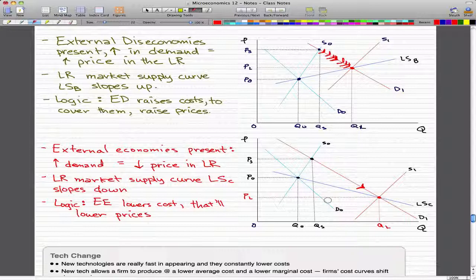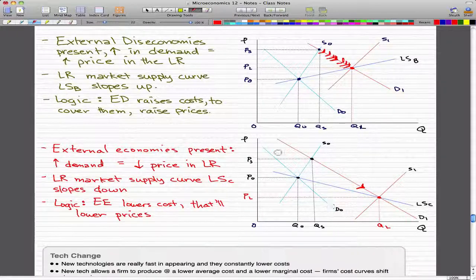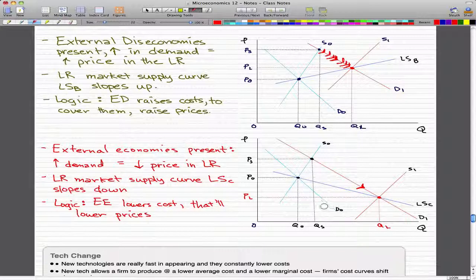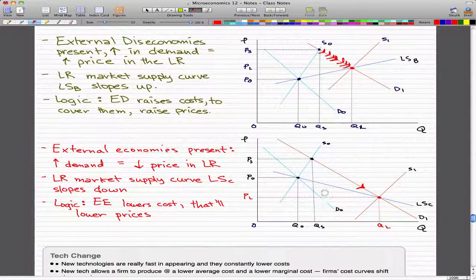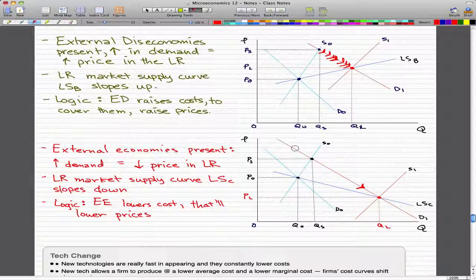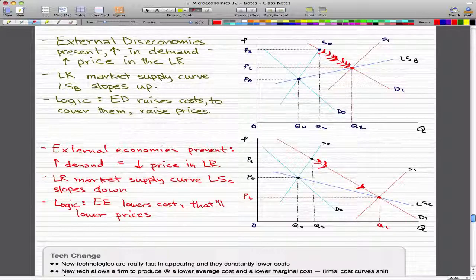Again, this is our original demand curve, this light blue line. When there was an increase in demand, the curve shifted rightward to this new long red line. Immediately, the price went up to this new equilibrium point, PS. And over time, in the long run, the price actually fell to this new point, which is P2.